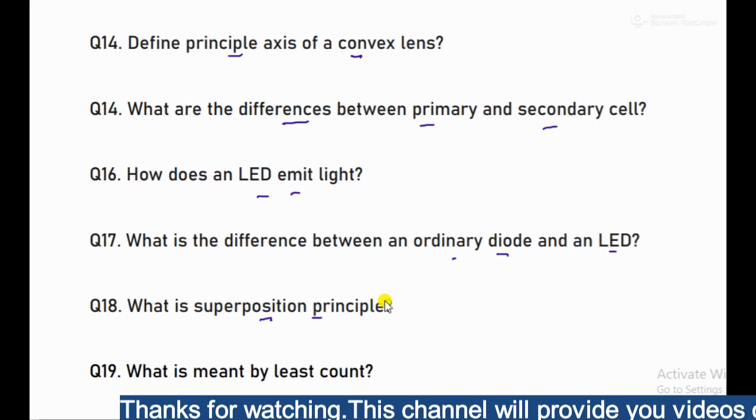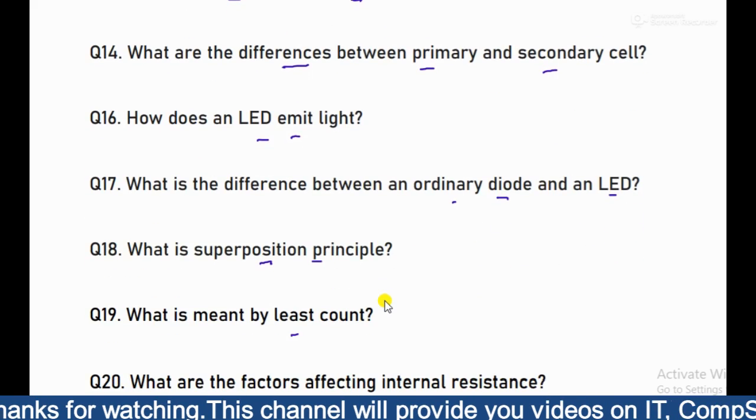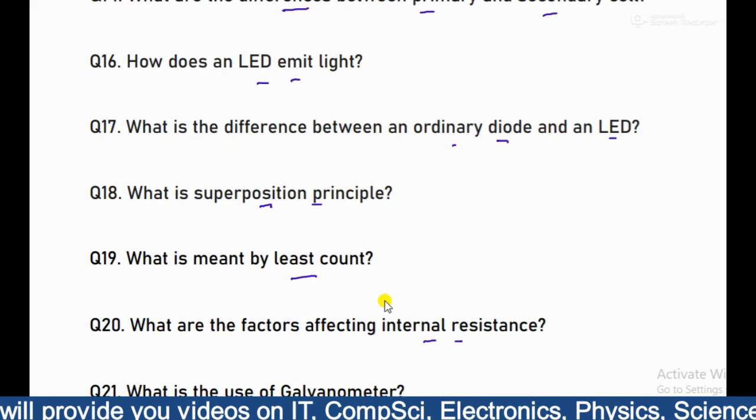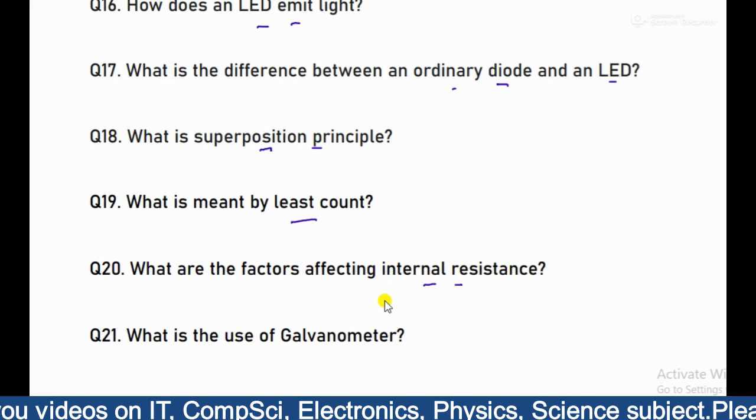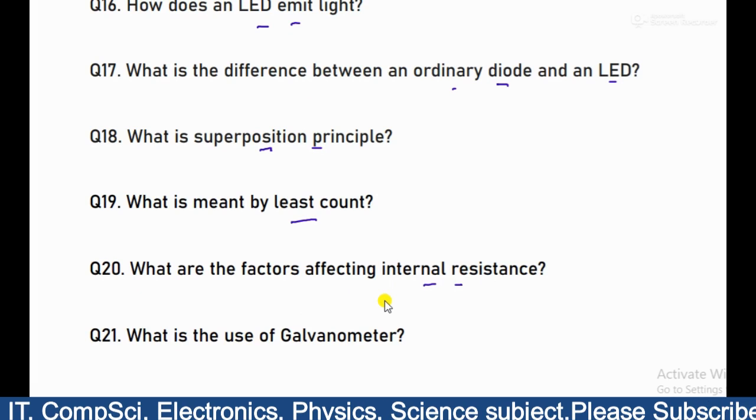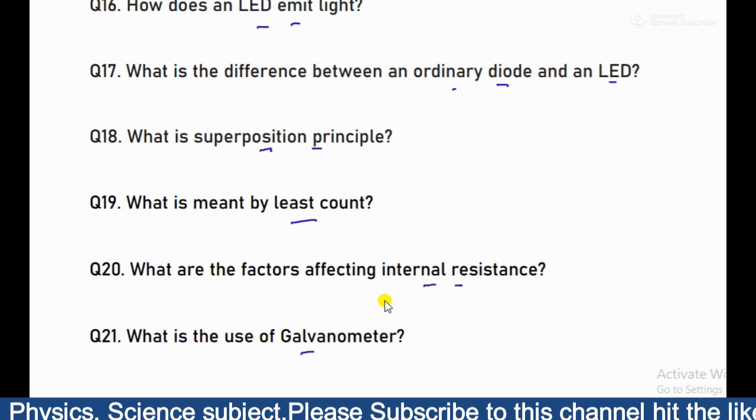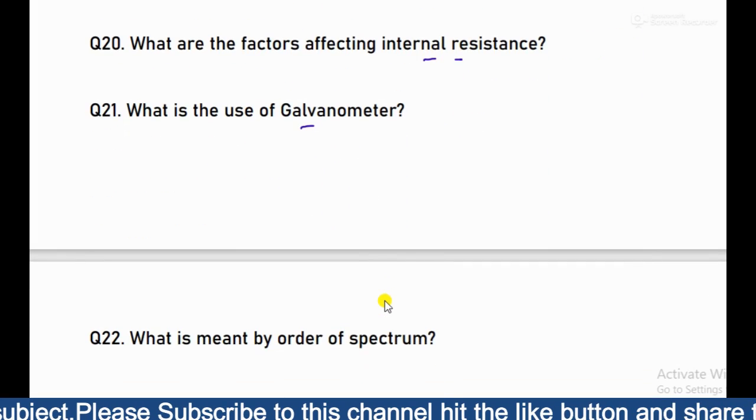Then what is the superposition principle. Then what is the least count. Then factors affecting internal resistance and other functions. Then what is the sensitivity of galvanometer, what factors affect it. Then use of galvanometer, what is the use of galvanometer, that's one question.